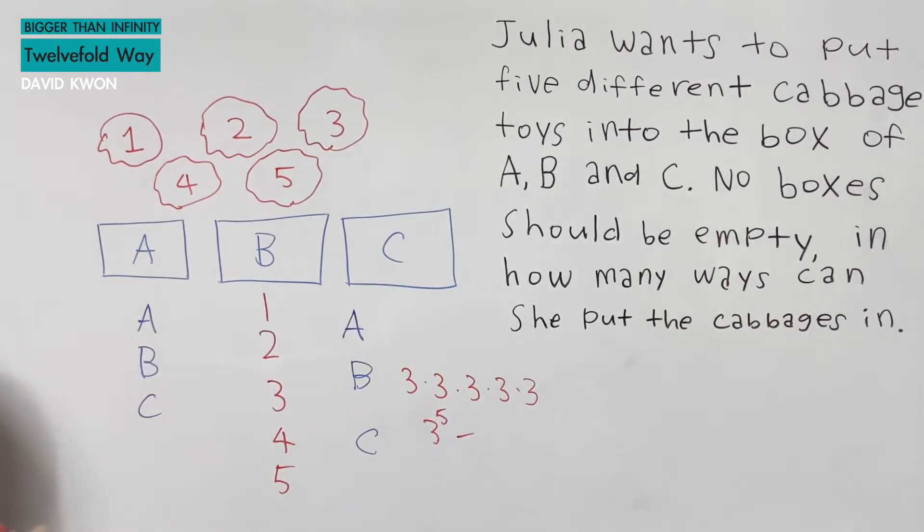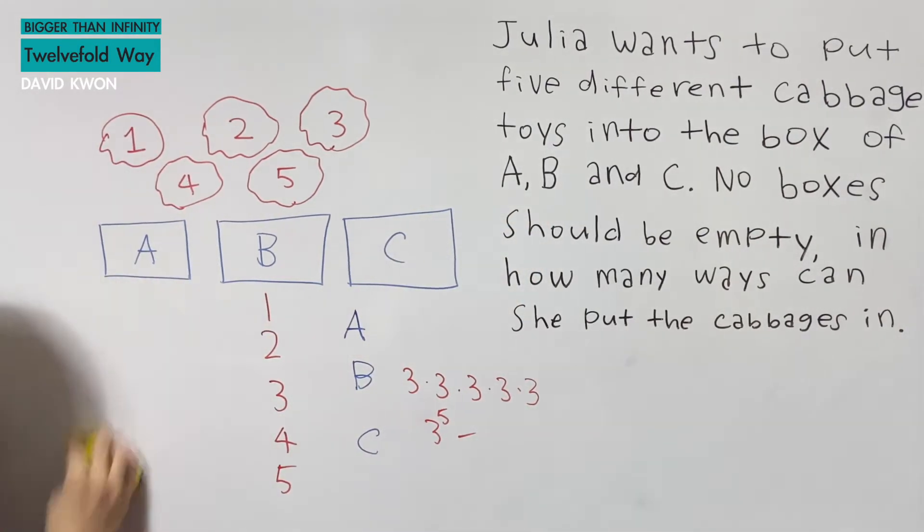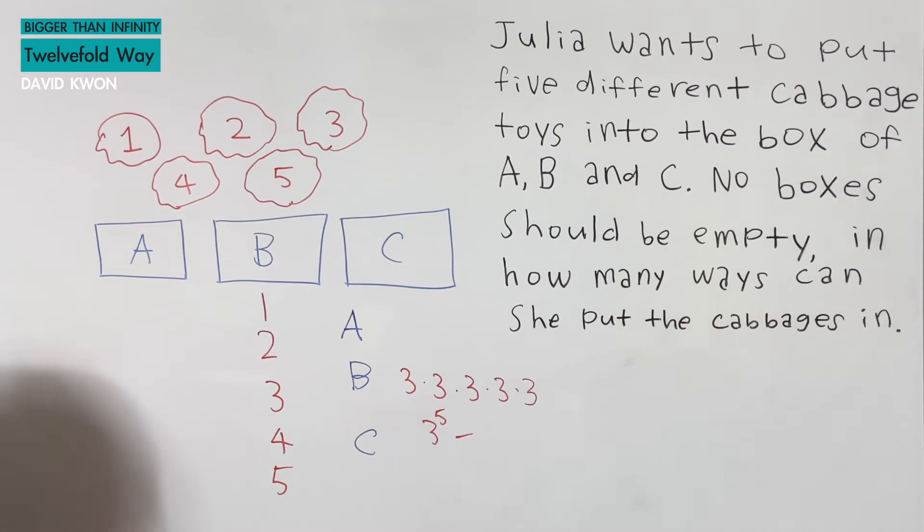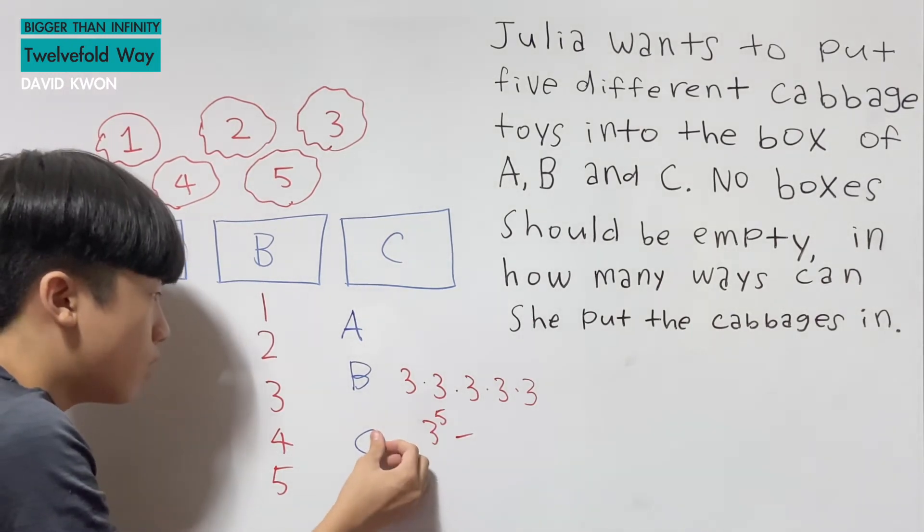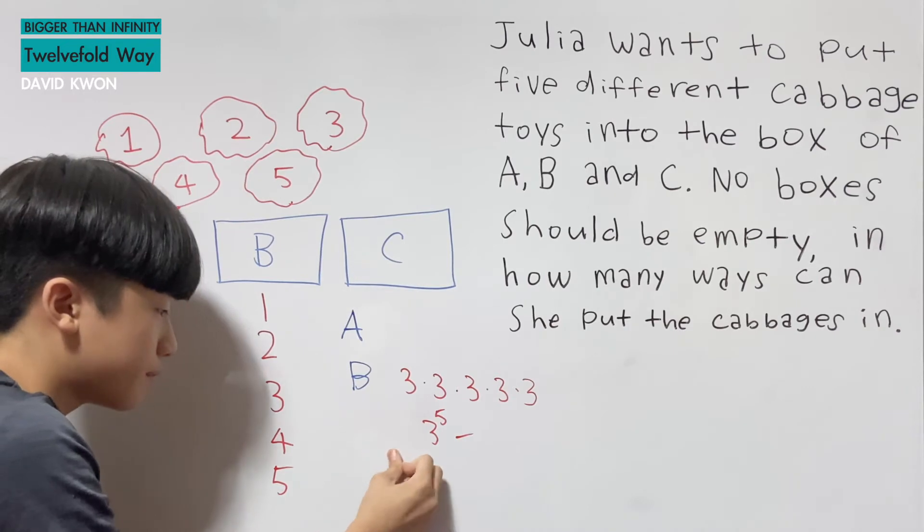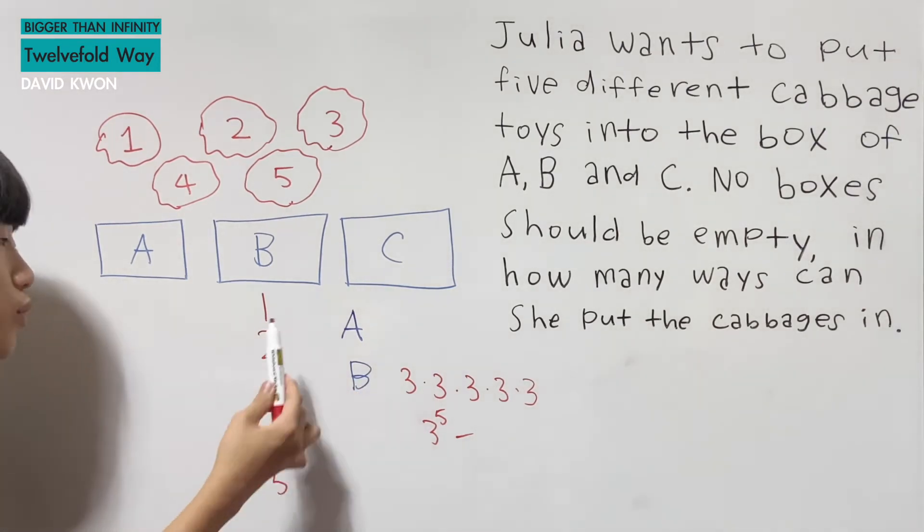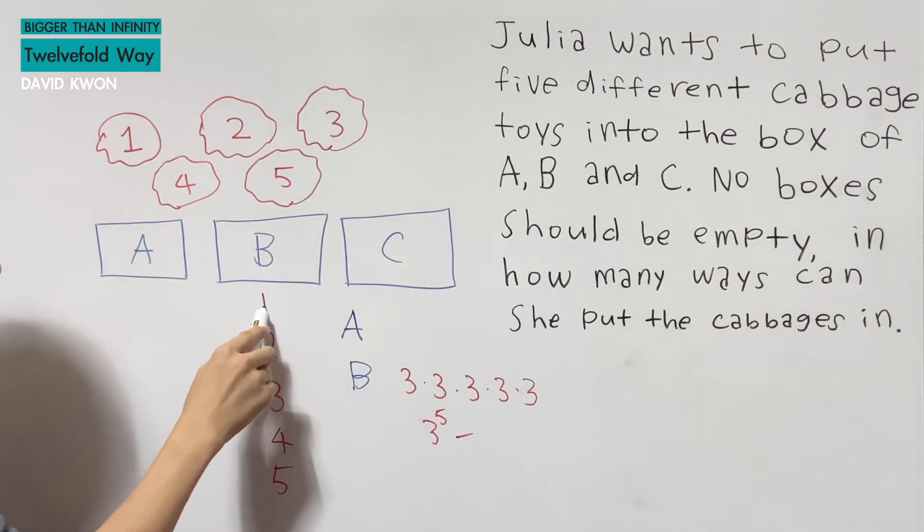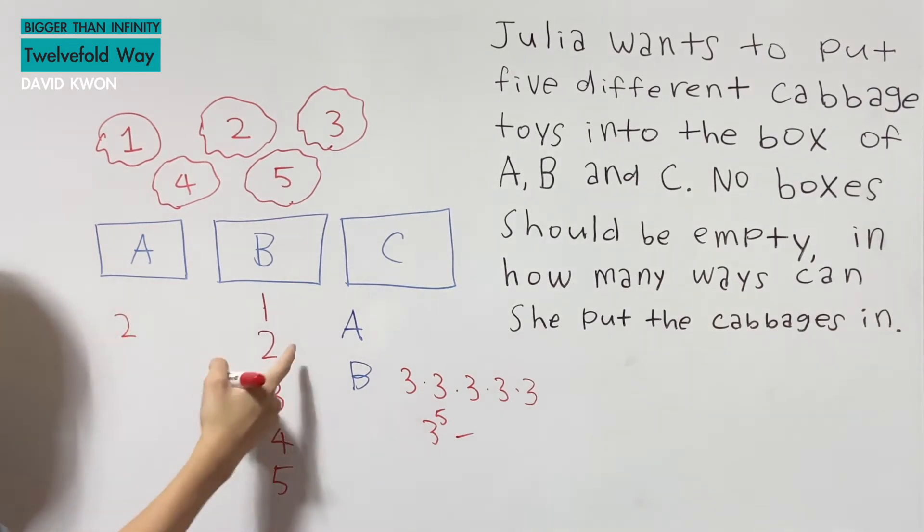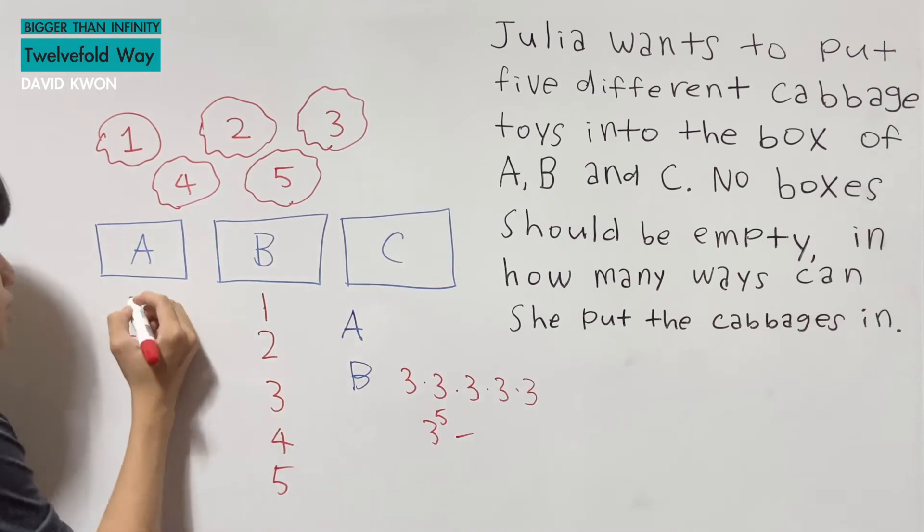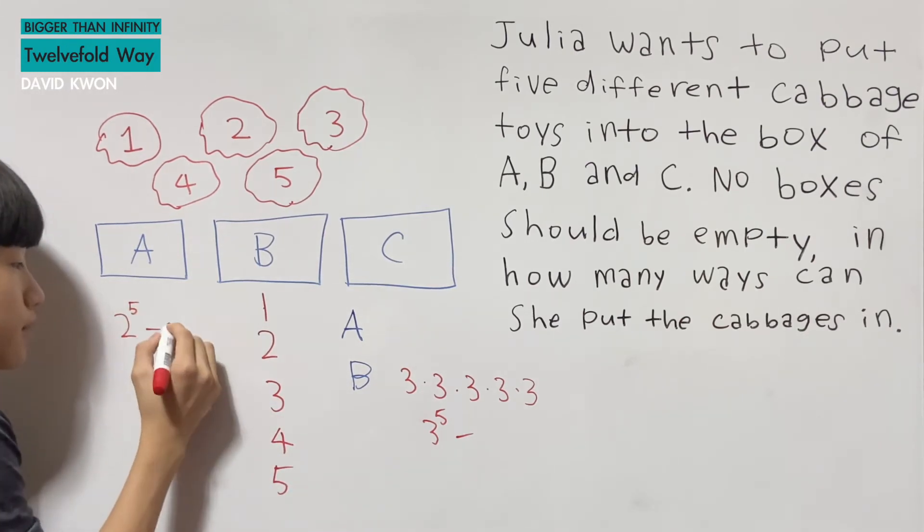And let's subtract that by the opposite of no boxes. So basically, let's count that we have no C. So we have one, two, three, four, five going to the box A and B. If we want that, how many ways can number one go to? A, B. That's just two. And two can go in two ways, three can go in two, two, two. So again, two to the power of five, but minus two.